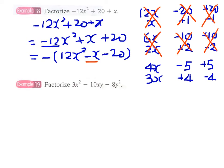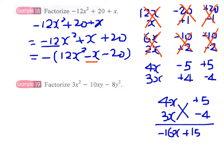Now we come up with the pair of factors: +5 and -4. -16x plus 15x gives -x. Therefore, now we can write the answer as -(4x + 5)(3x - 4).